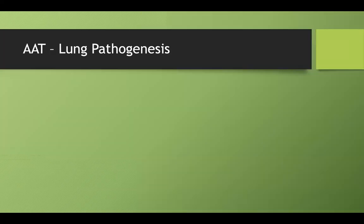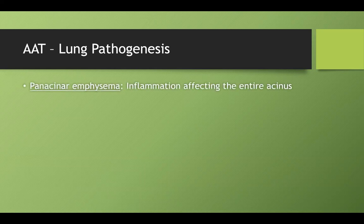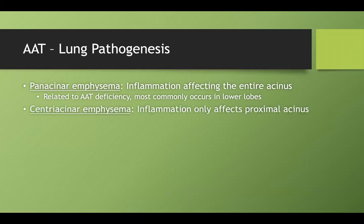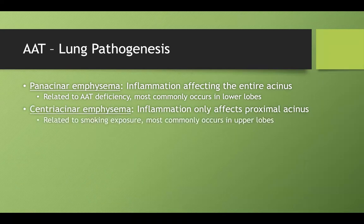I want to explain panacinar emphysema versus centriacinar emphysema. 'Pan' always means everything — like Pangaea when all the continents were in one area — so panacinar means it affects the entire acinus. You'll see this in alpha-1 antitrypsin deficiency, most notably in the lower lobes of the lungs. Centriacinar emphysema, by contrast, only affects the proximal portion of the acinus, not the distal portion, and is related to smoking exposure, most often occurring in the upper lobes.